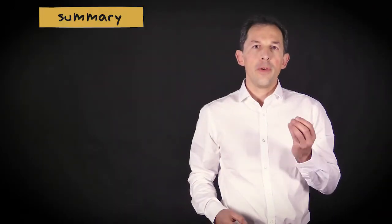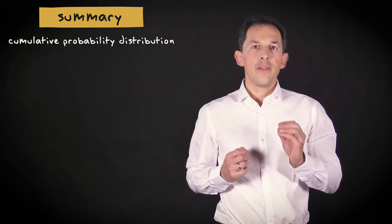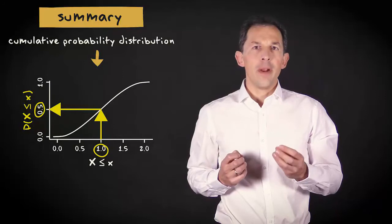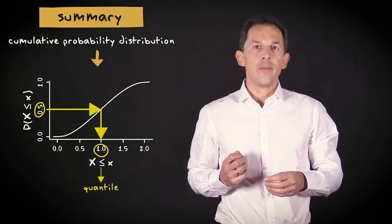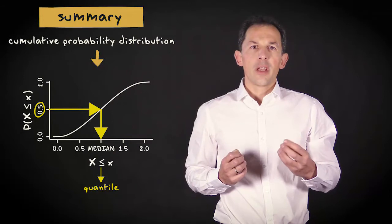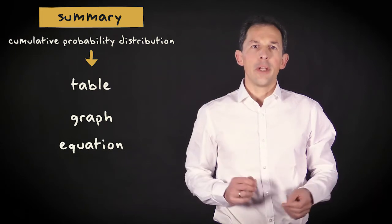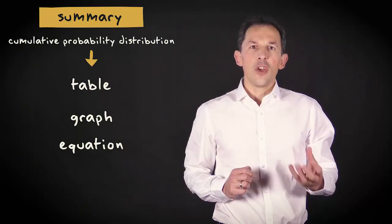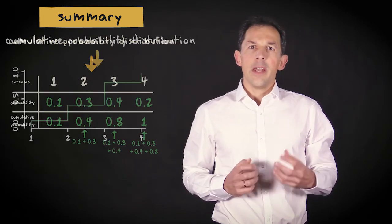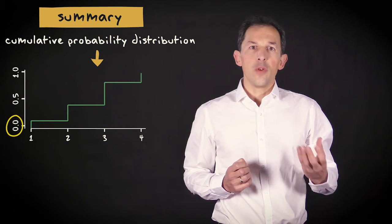Let me summarize what I hope you understood from this video. A cumulative probability of a random variable is the probability of obtaining a value lower than or equal to a threshold value. Considered in the other direction, a cumulative probability specifies a quantile of the random variable. For example, at a cumulative probability of 0.5, the median of the random variable is found. Just like a probability distribution, the cumulative probability distribution can exist in the form of a table, a graph, or an equation. It can be obtained by calculating a cumulative sum of the probabilities from the smallest up to the largest value of the random variable. And it is continuously increasing with increasing values of the random variable, starting at 0 and incrementing to a probability of 1.